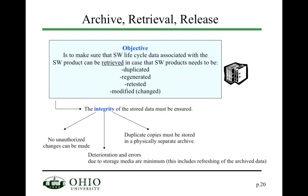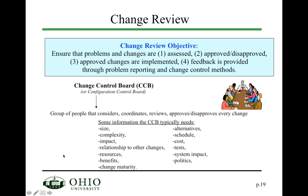Archival, retrieval, and release is one of the basic configuration management activities. You need to make sure the software product can be retrieved in case it needs to be duplicated, regenerated, retested, or modified. You want to be able to archive the software but also retrieve it, and when done, release it. You also want to guarantee the integrity of the stored data, ensuring no unauthorized changes occur and that all changes go through the standard change review process.